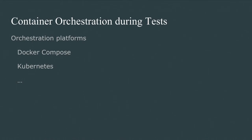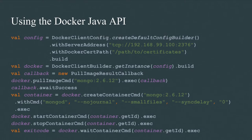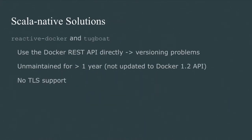The first thing we looked at was using the Docker Java API. This will do what you need it to do, but it's a Java API — not very Scala idiomatic. You have to create callbacks that make it unpleasant to use when embedded within a Scala project. So we wanted to find a Scala project that would let us integrate this in a much nicer way.